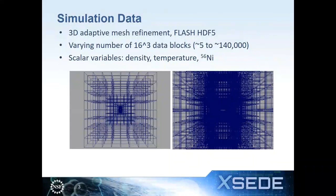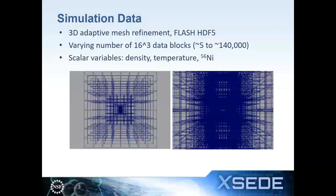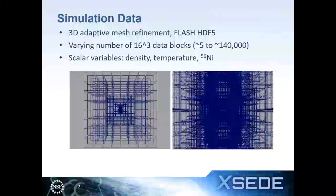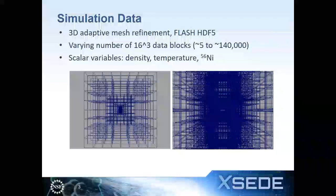If supernovae are created from these explosions, you would see a specific nickel distribution. The idea behind the simulation is: if we can show nickel being created during or right after the collision and during the thermonuclear explosion, then it might establish the link between supernovae and white dwarf collisions.